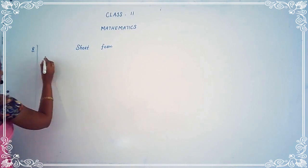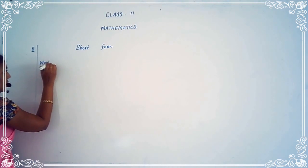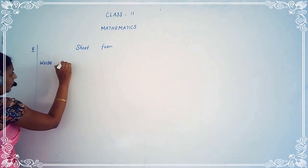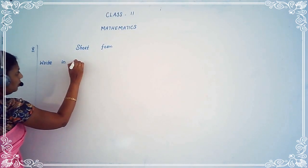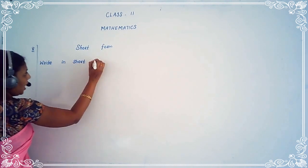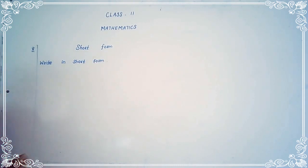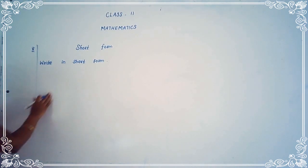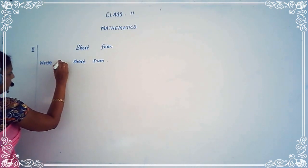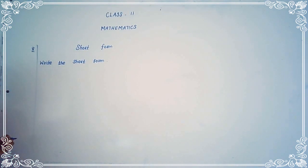The heading is 'Short Form.' Write in short form. The first one: nine thousands plus five hundreds plus four tenths plus six ones.